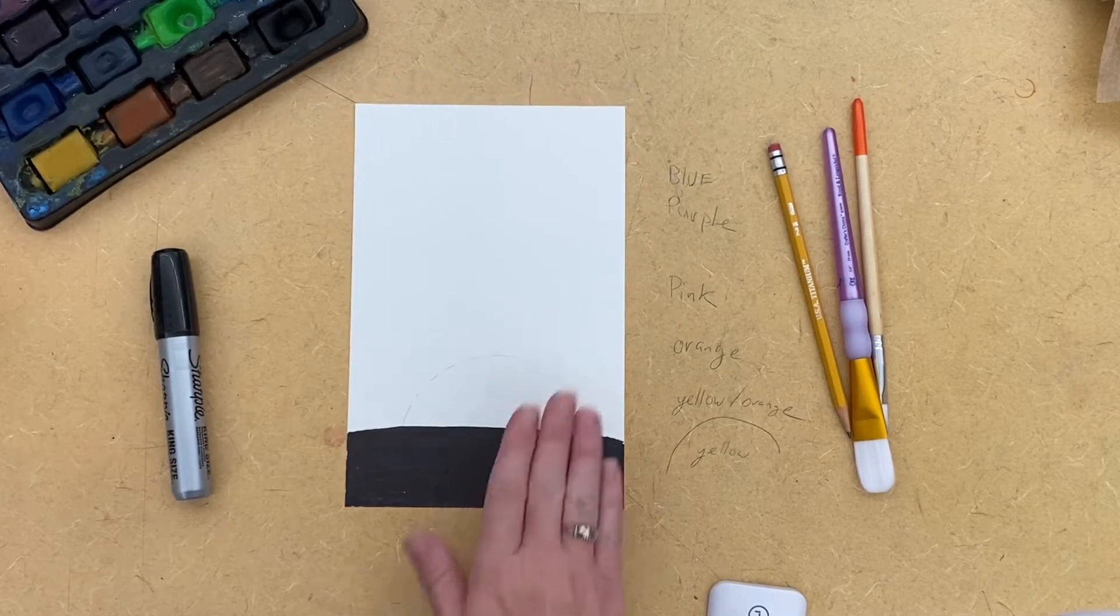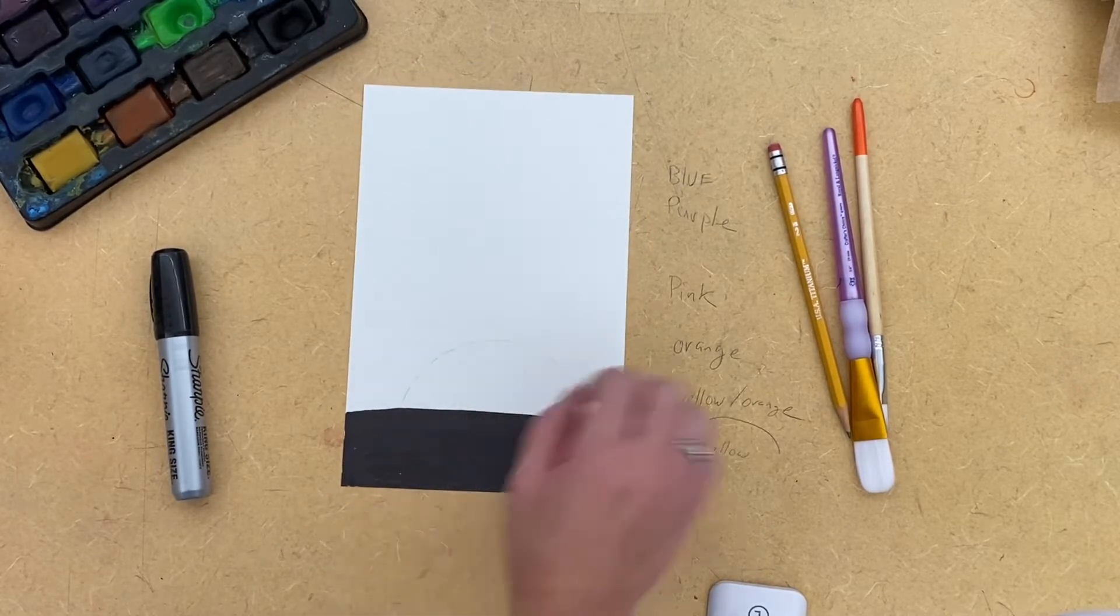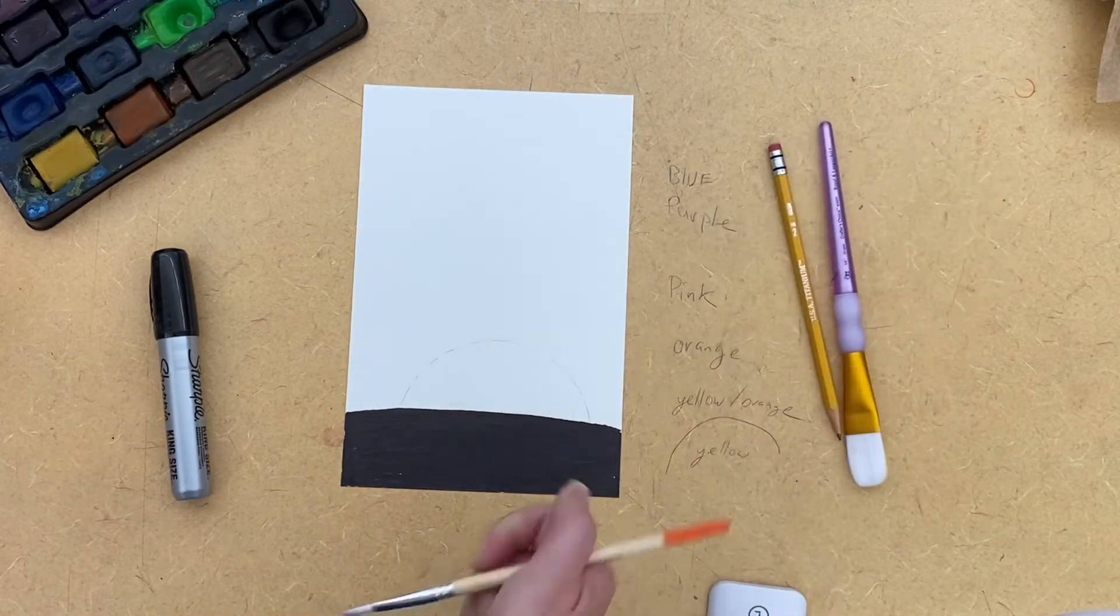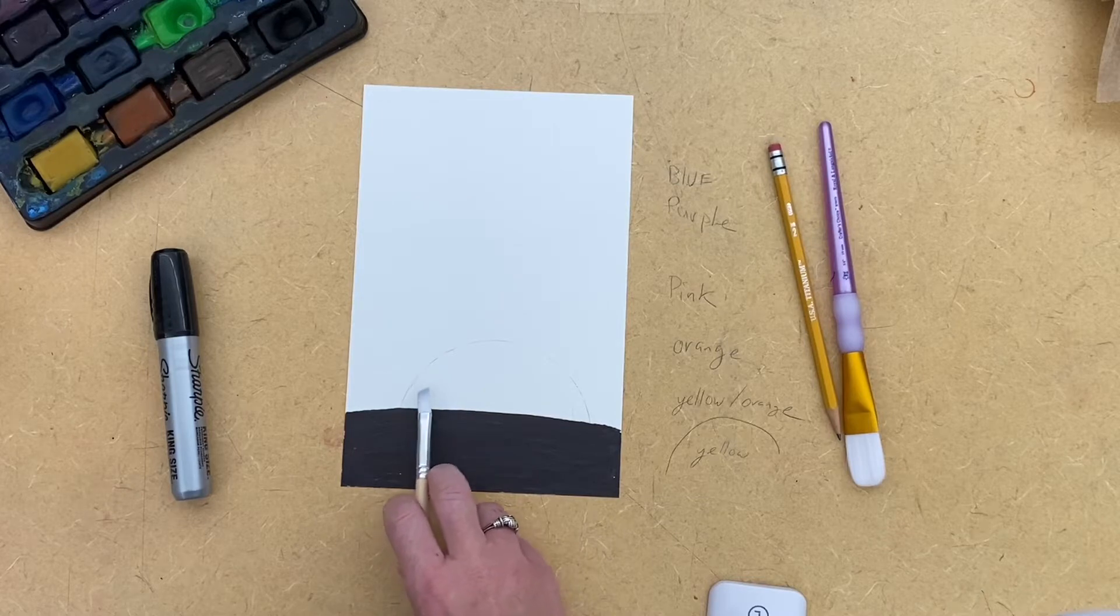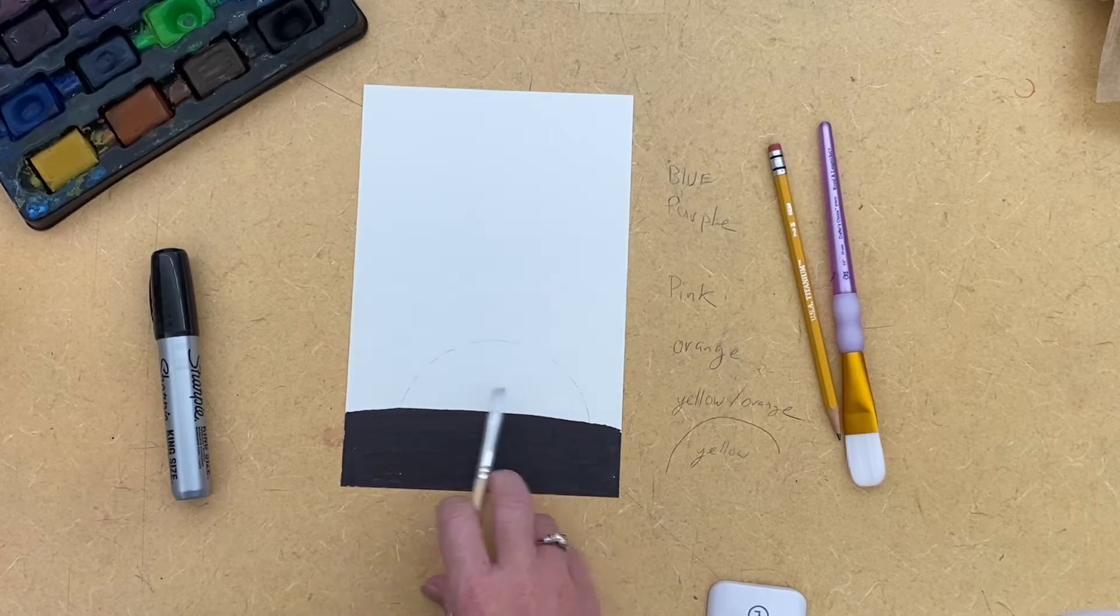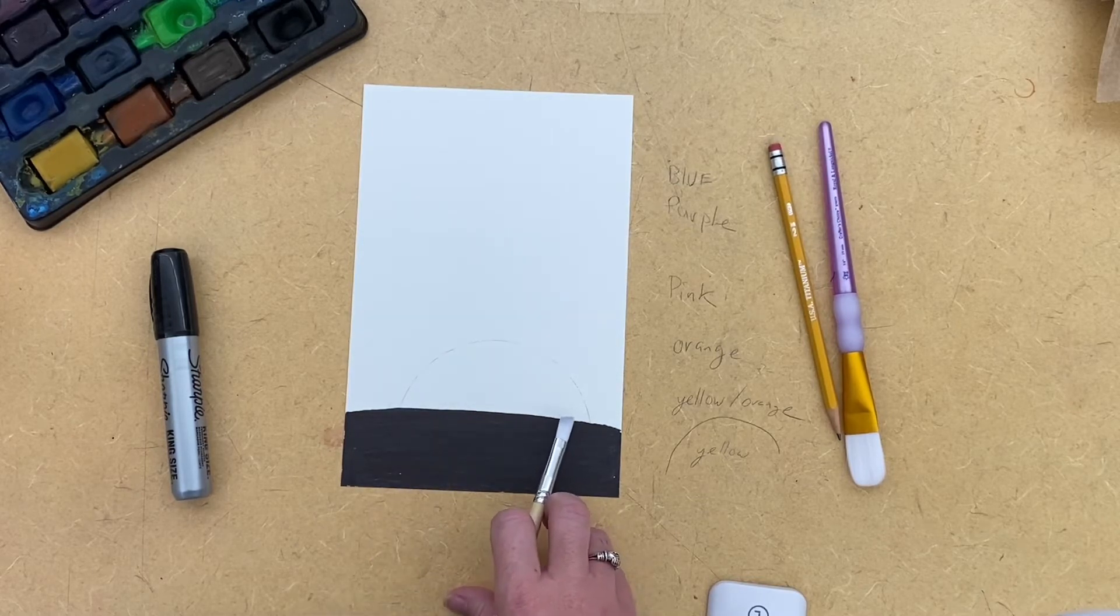So I would practice it once and then do your final draft. What I'm going to do first, especially if you're doing the sun, you're going to want to paint the sun and then dry it. So I'm going to paint the sun. I'm going to pause the video.